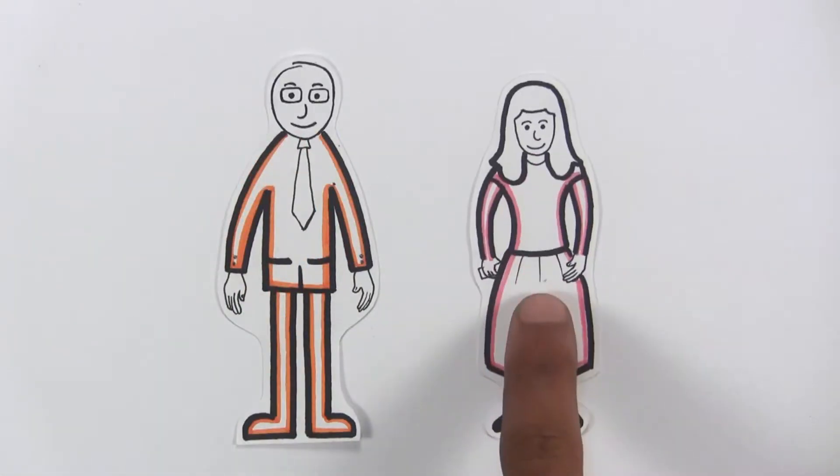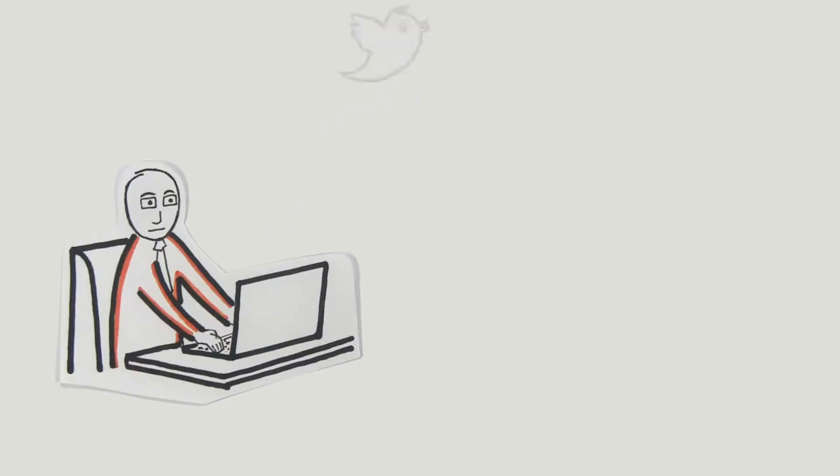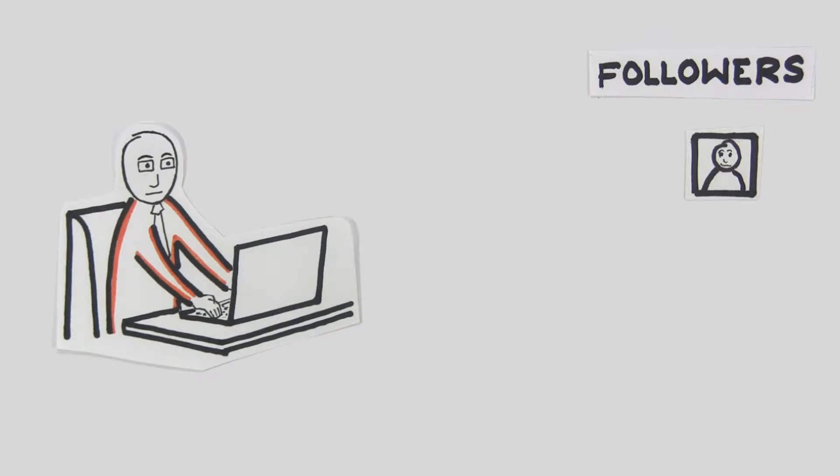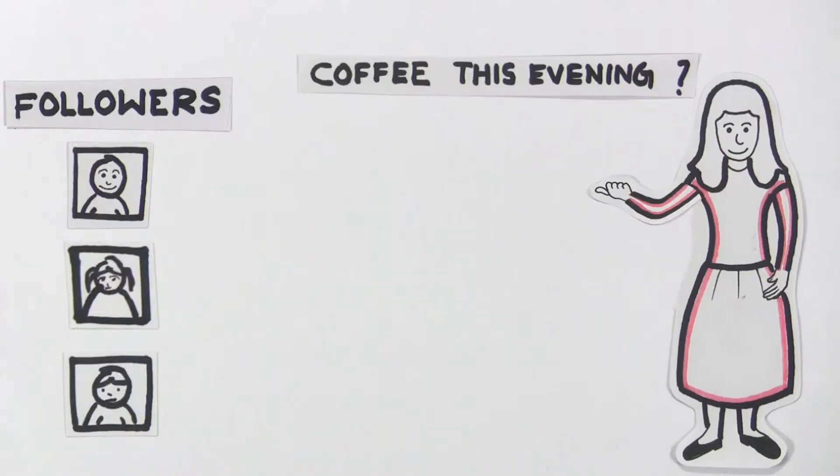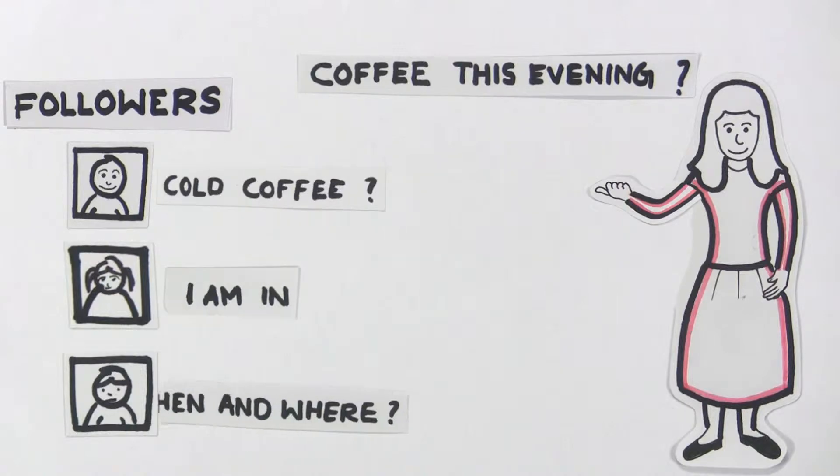Meet John and his loving daughter Jane. Both John and Jane use Twitter every day. John uses it to grow his business, while Jane uses it to stay in touch with friends and get the latest news updates.